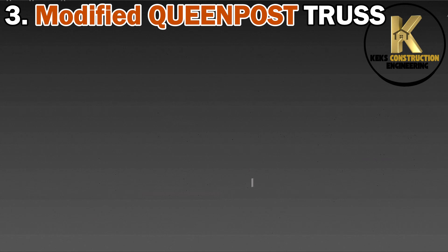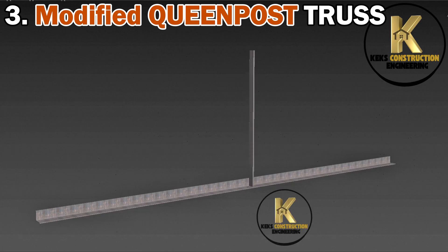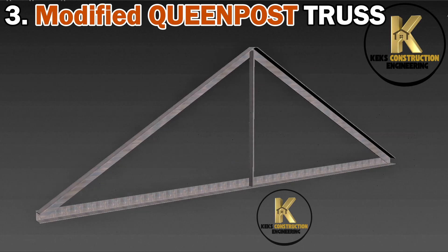3. Modified Queen Post Truss. This is a variation with additional bracing for greater stability, used in barns and larger residential buildings.